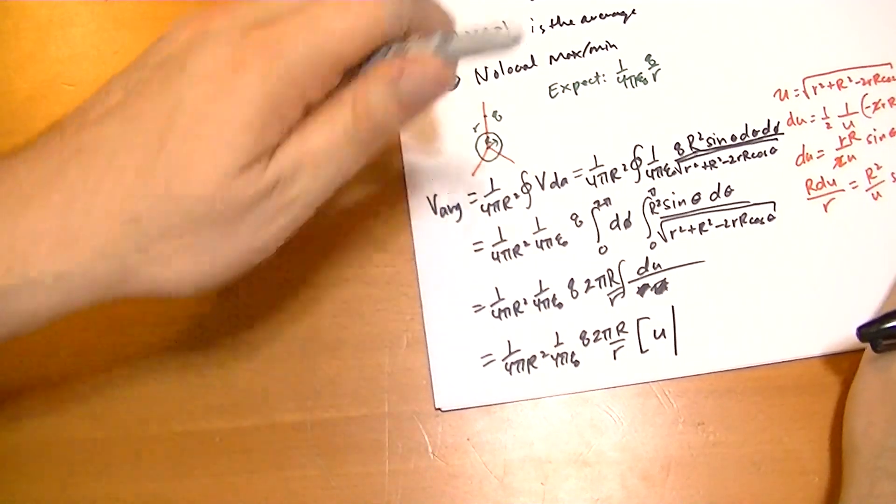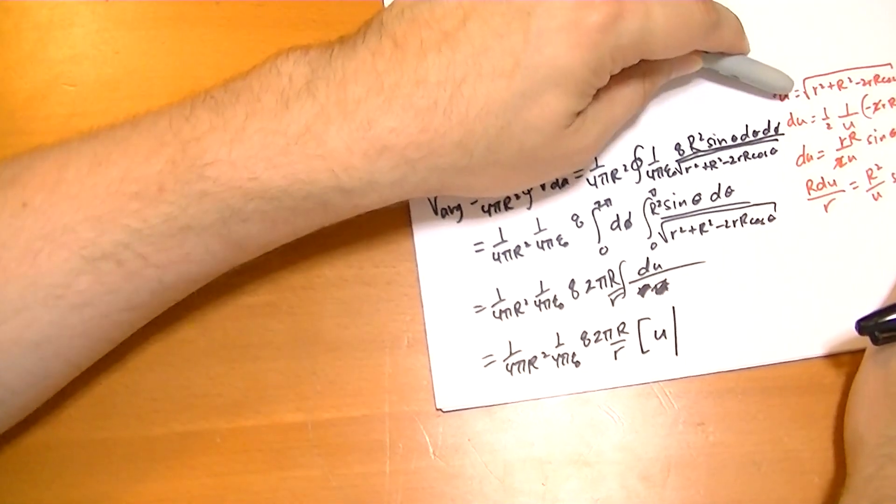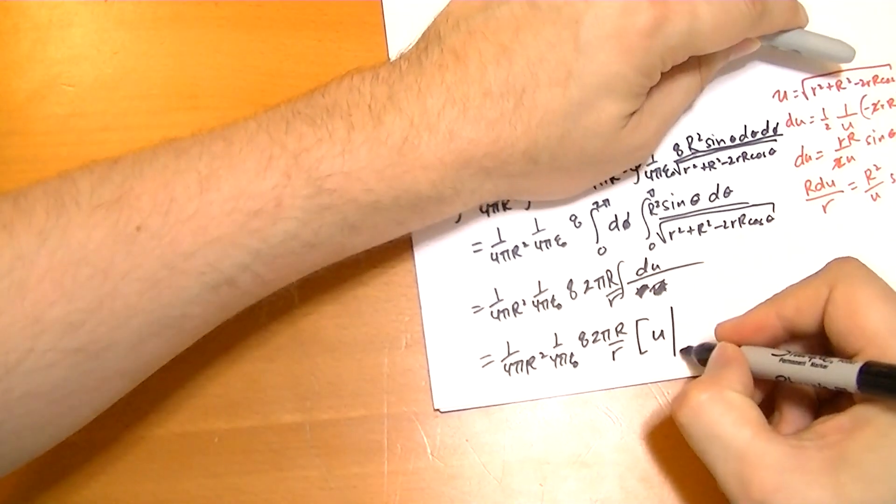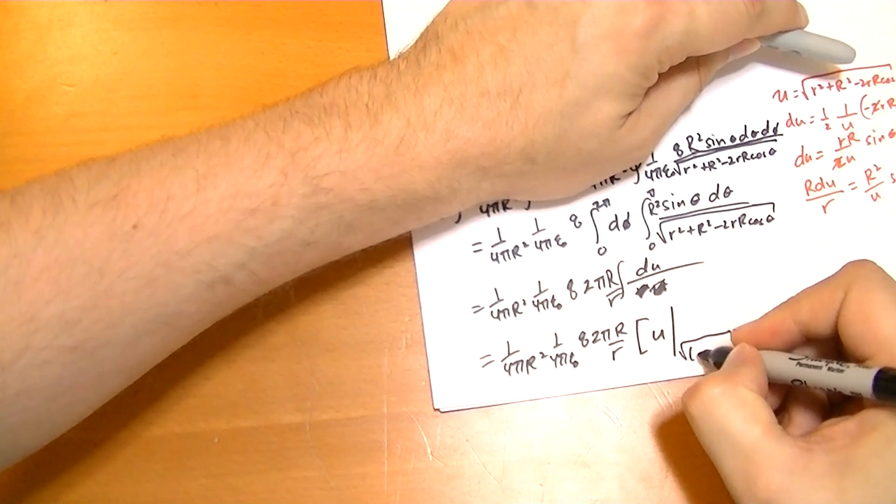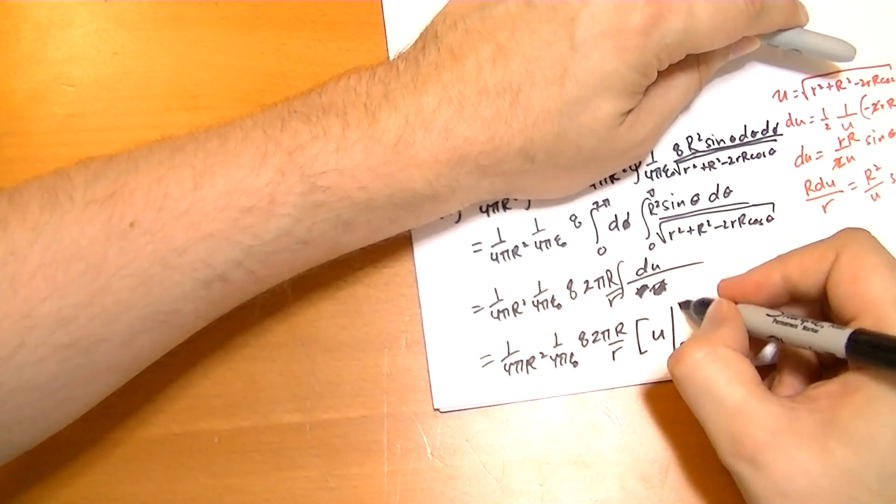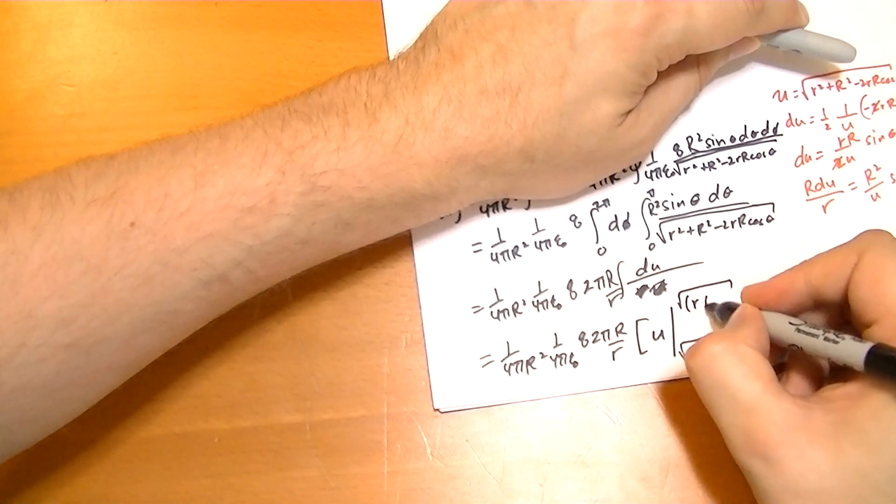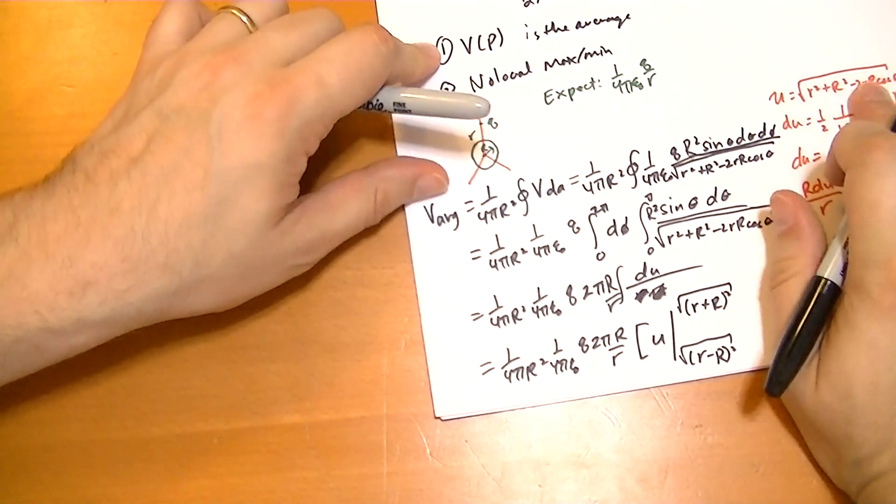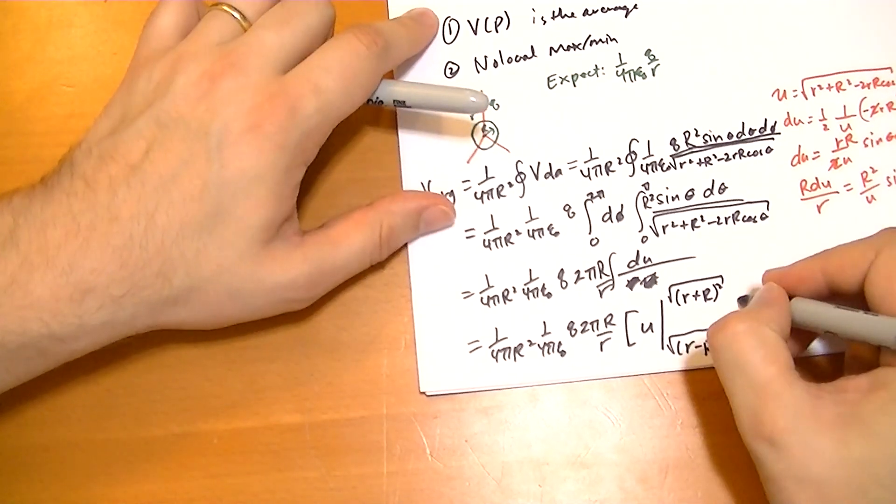Well, when theta is 0, then u becomes, let's see, cosine theta is 1, so it becomes the square root of r minus R squared. And when theta is pi, it becomes the square root of r plus R squared. Completing the square in there.